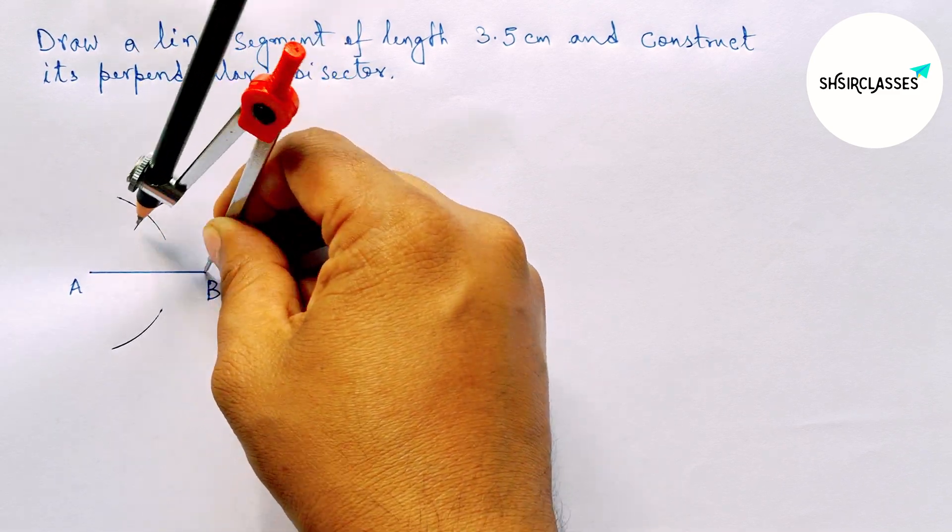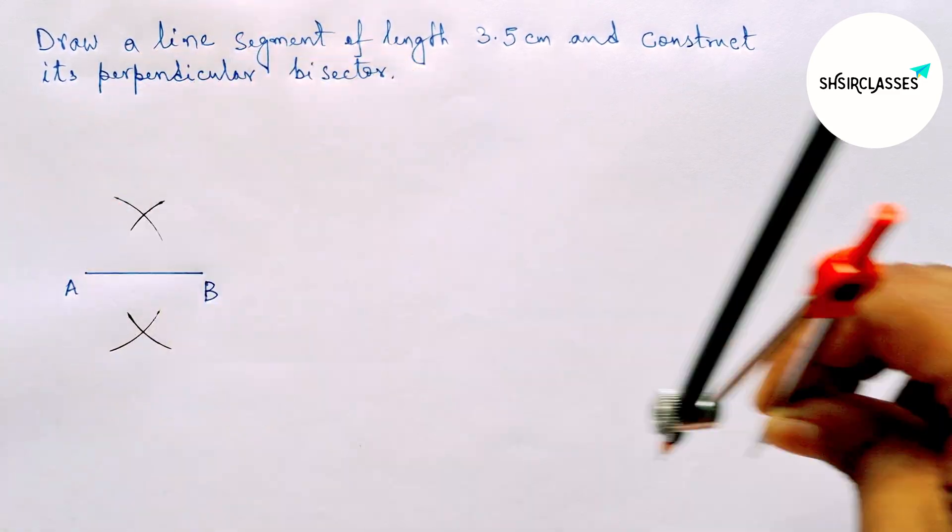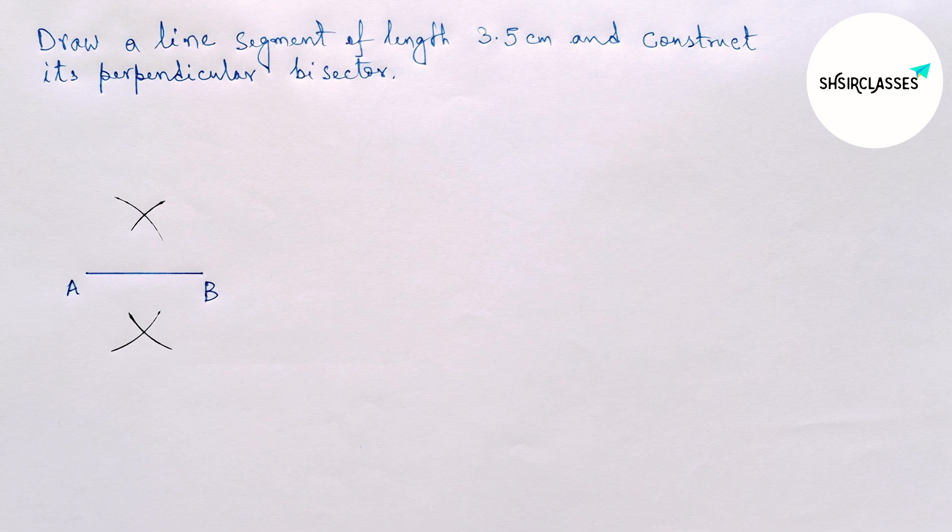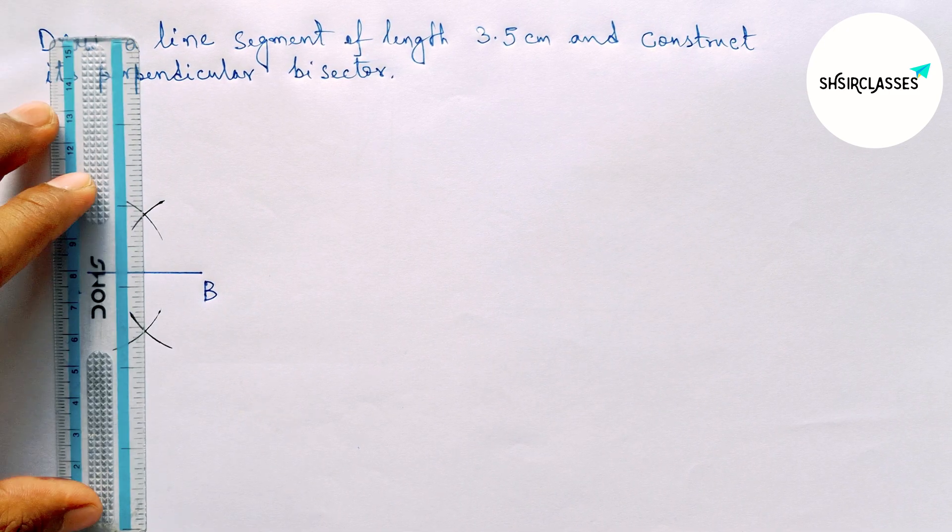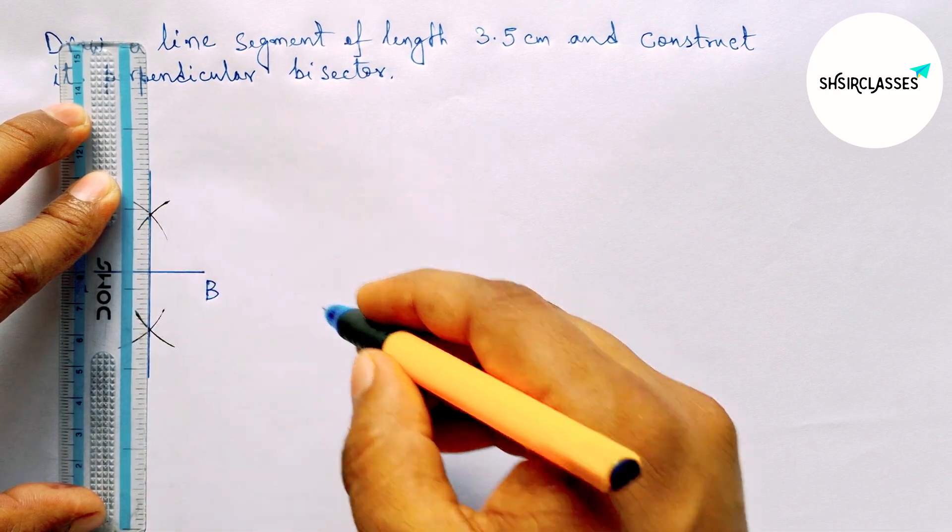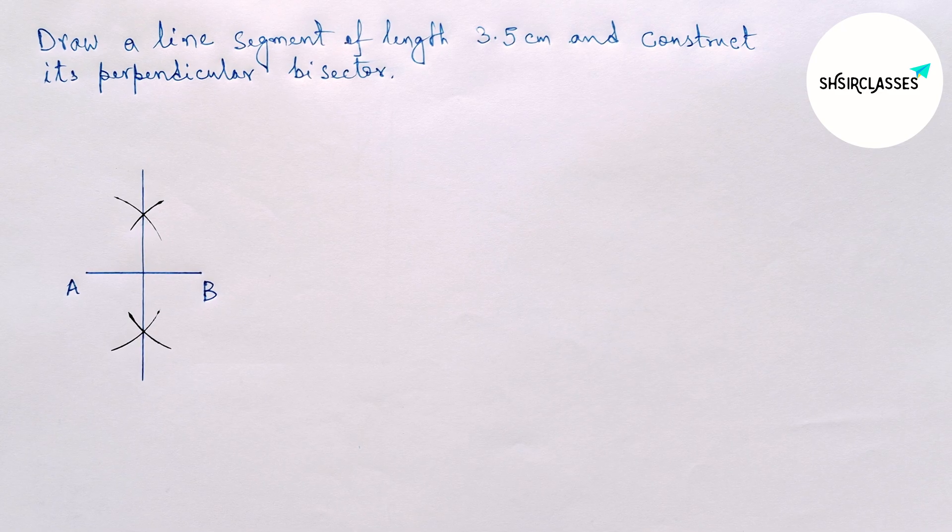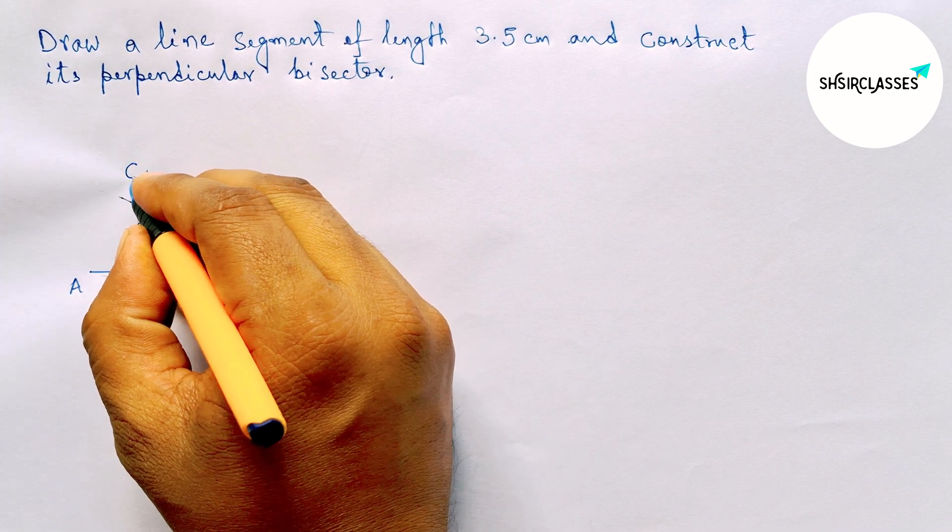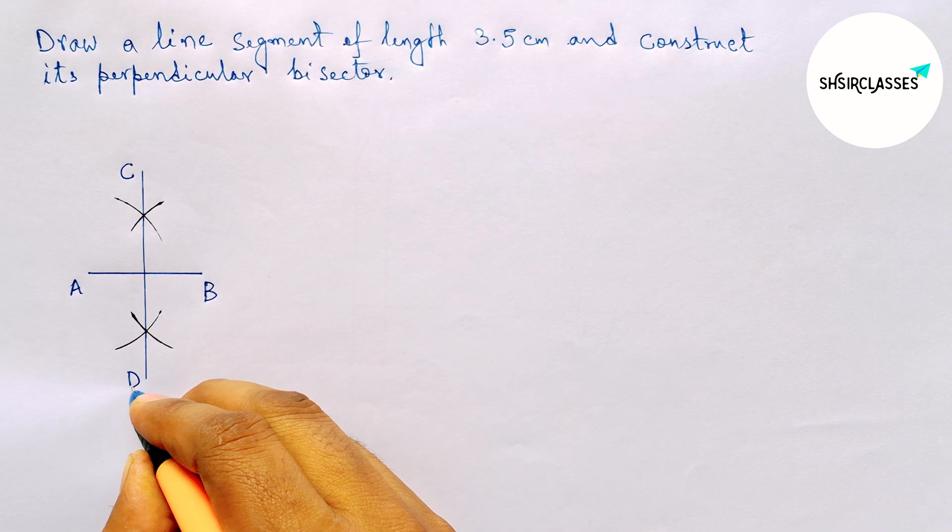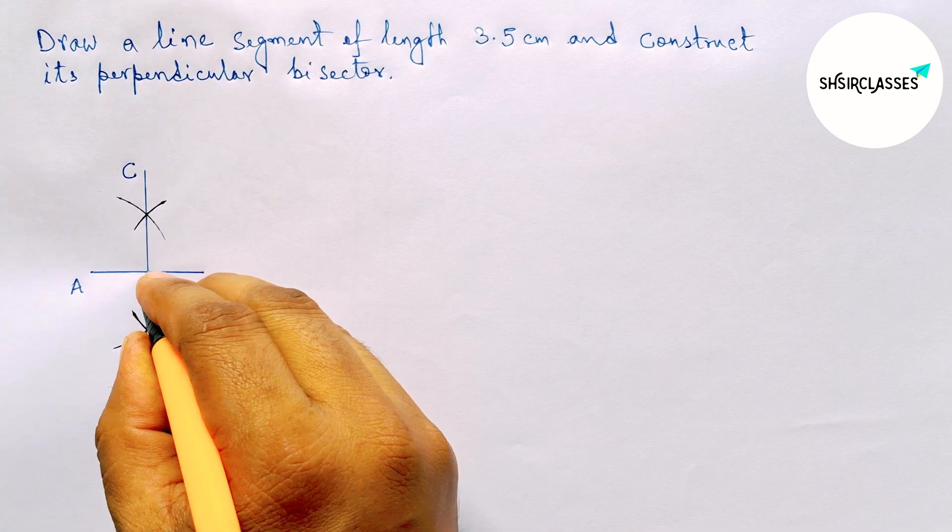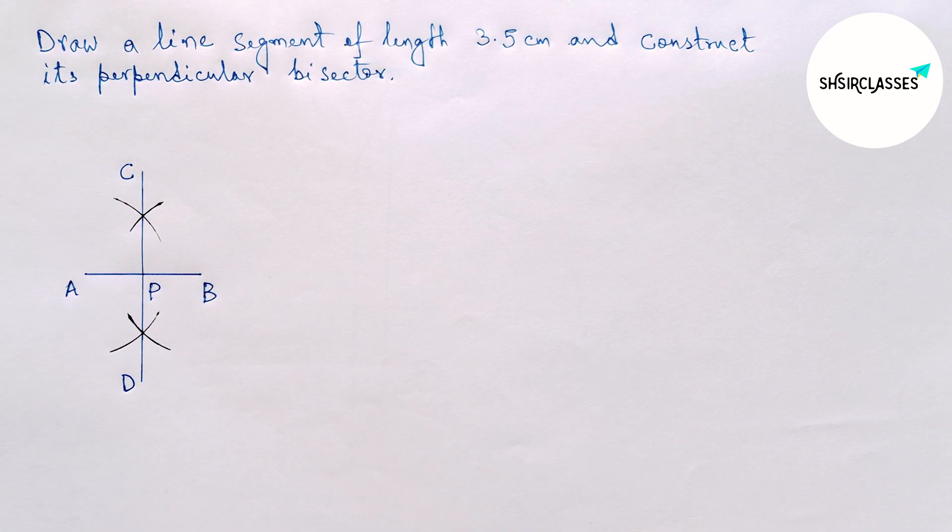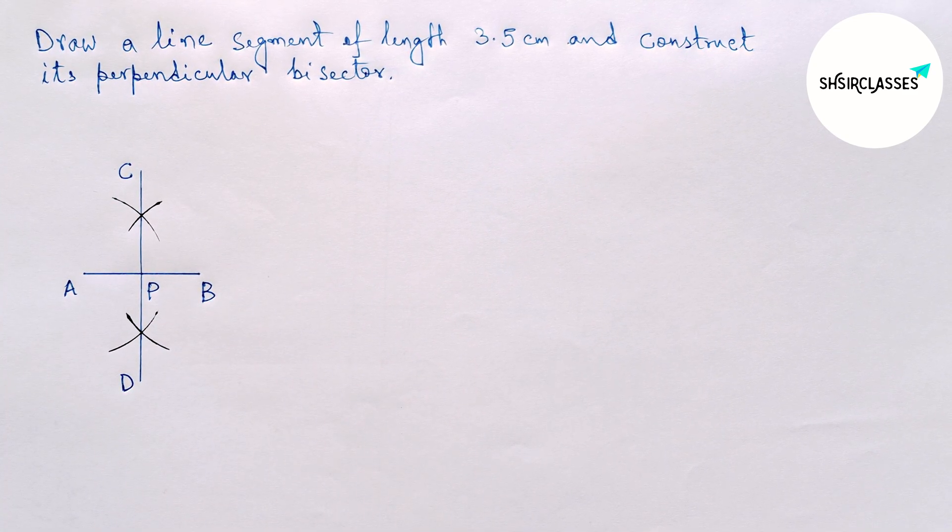Now join the intersection points. This is the required perpendicular bisector. So labeling here point C and here D. Both lines meet here at a point. Therefore,